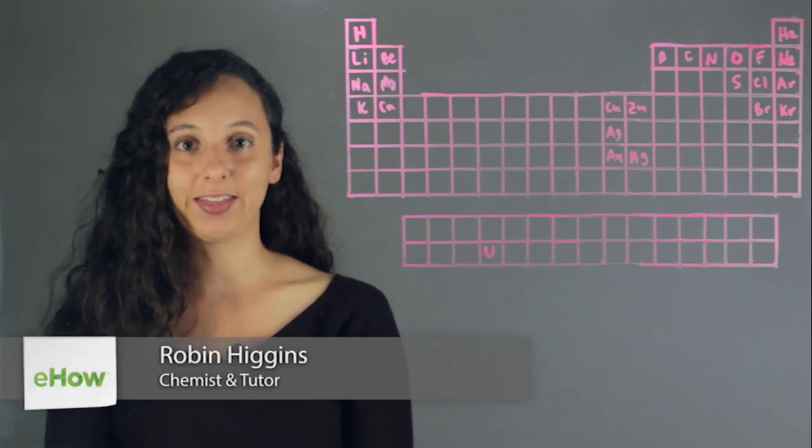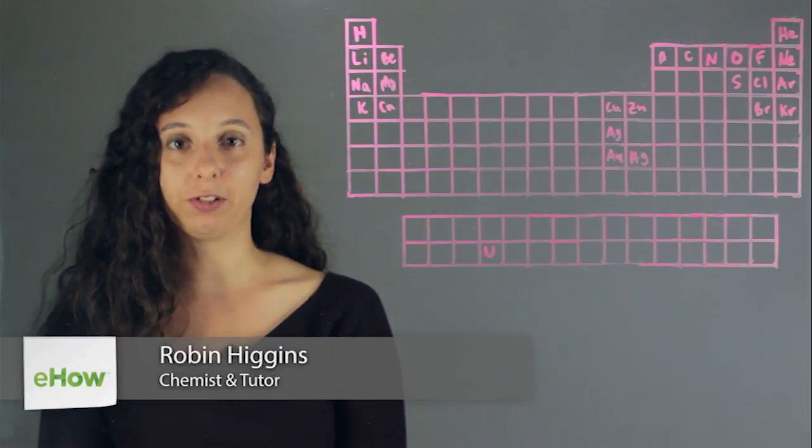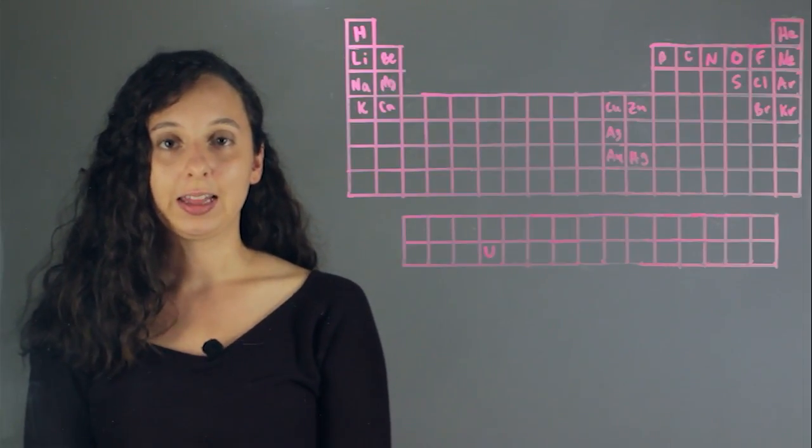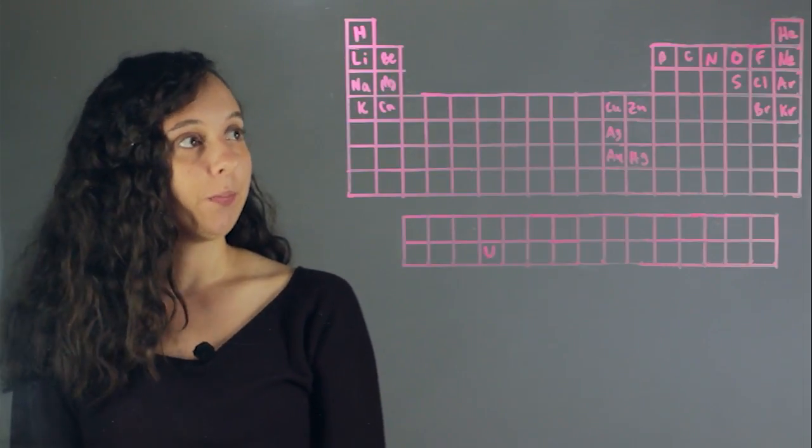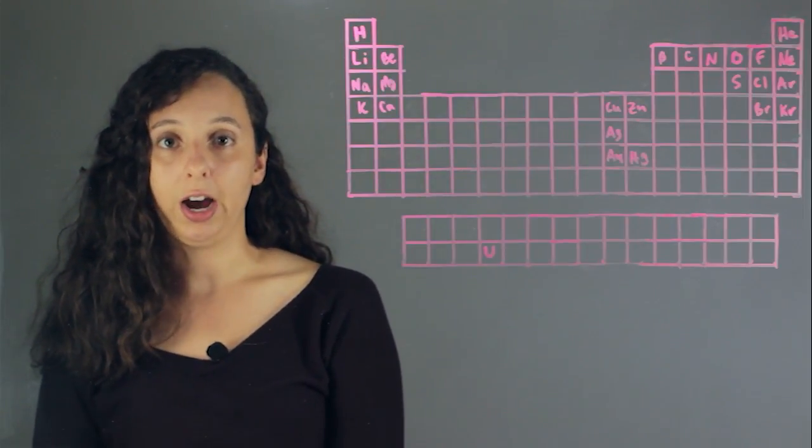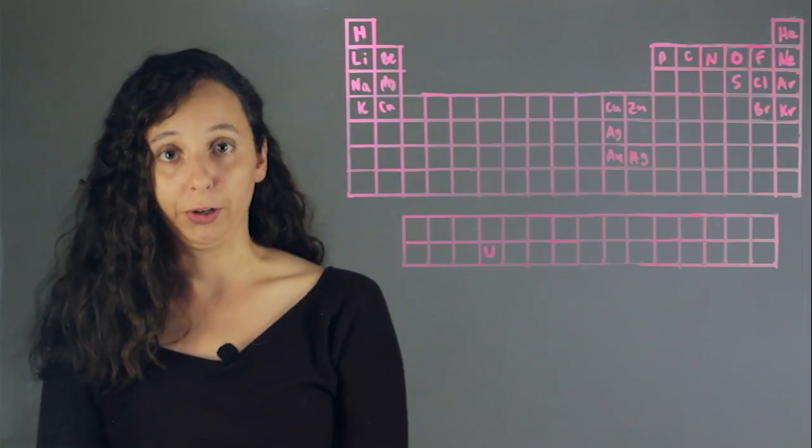Hi, I'm Robin Higgins and this is reactive versus non-reactive atoms. Alright, so to look at this question, let's examine the periodic table. So we can figure out a lot about how an atom is going to react or not by looking at where it's placed in a periodic table.